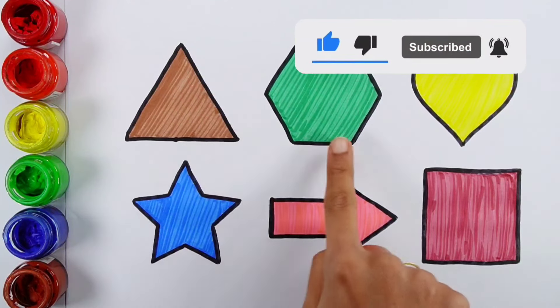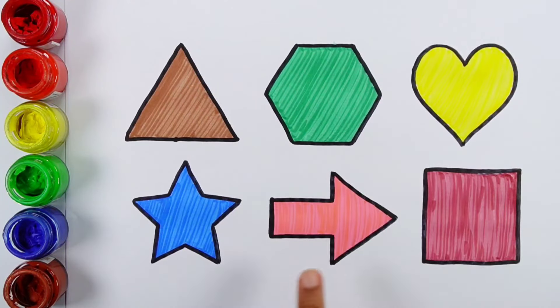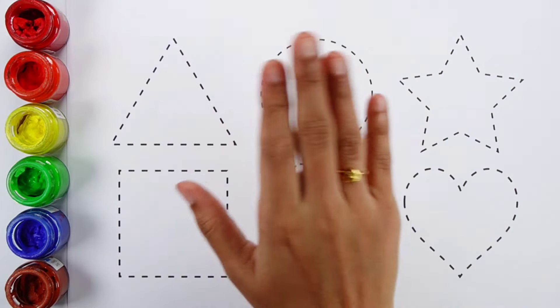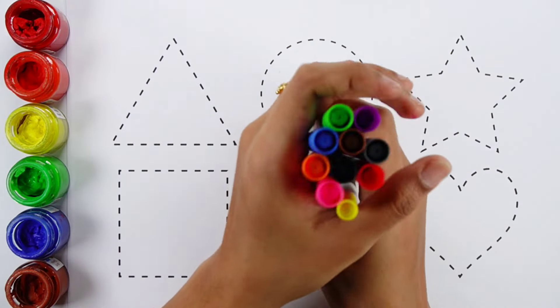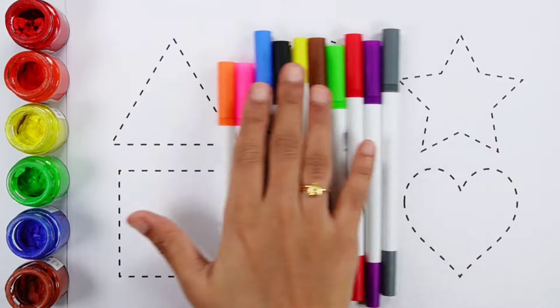Triangle, Hexagon, heart, Star, Arrow, Square. Hello guys, Let's learn some colors